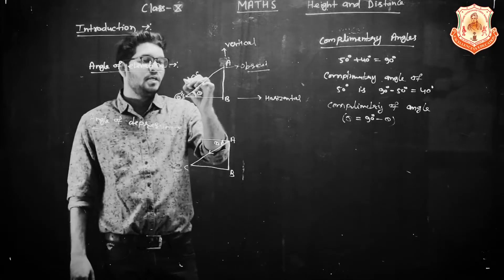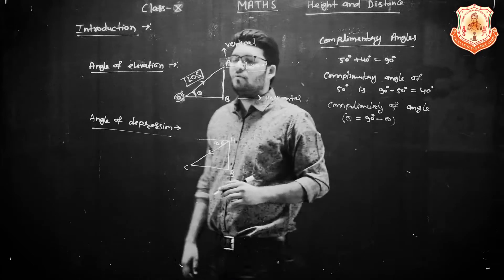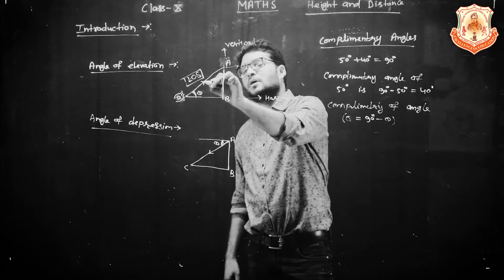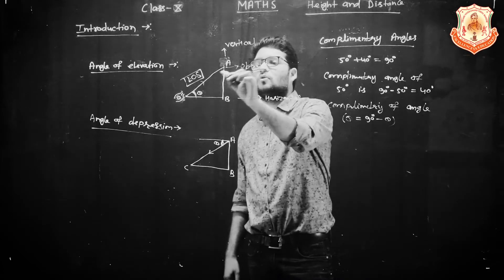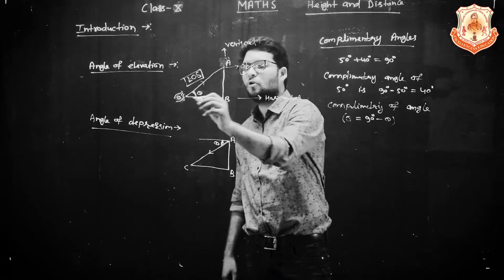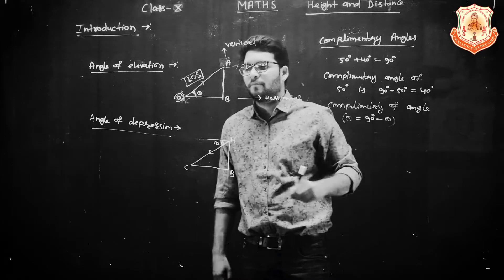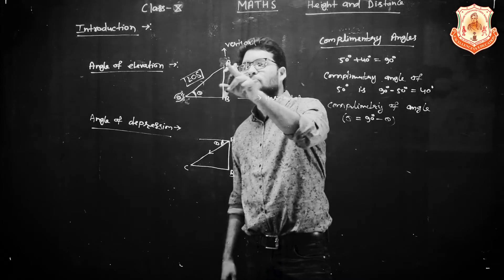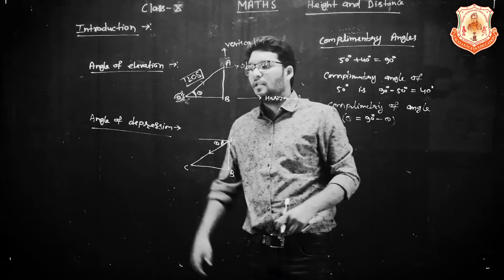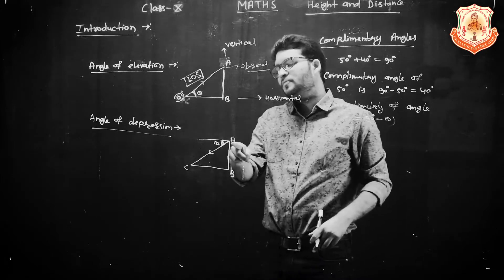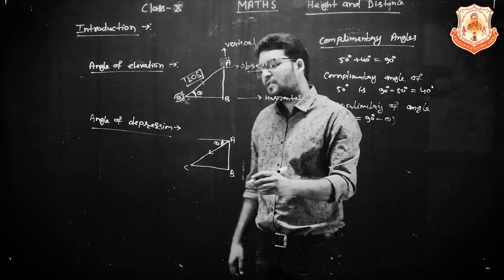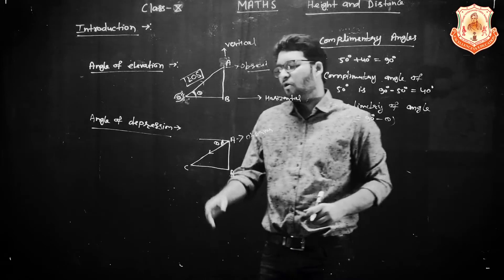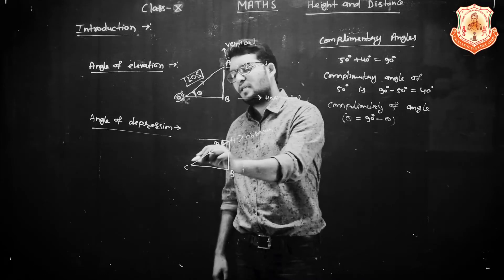And what is LOS? Line of Sight. Line of Sight is the line along which you are observing any object. Here there is an Observer at point C, and A is the object being observed. That means Line of Sight is CA. And in Angle of Depression, Observer is at A and Object is at C, so Line of Sight is AC.